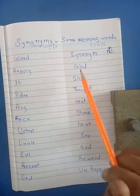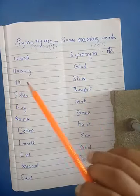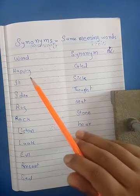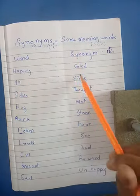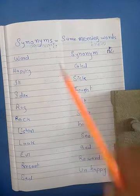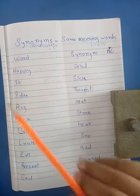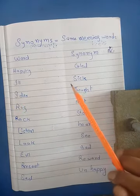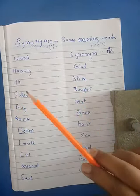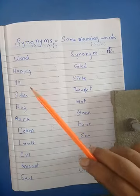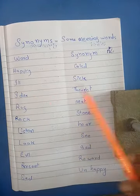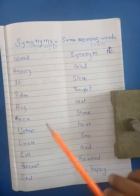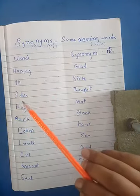Happy, glad — happy کا مطلب ہوتا ہے خوش، glad کا مطلب ہوتا ہے خوش۔ Ill — synonym of ill is sick۔ Ill کا مطلب ہوتا ہے بیمار، ill اور sick means بیمار۔